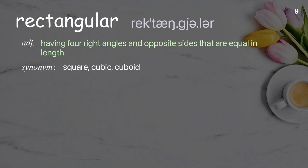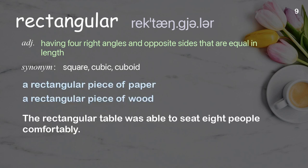Rectangular: having four right angles and opposite sides that are equal in length. Examples: a rectangular piece of paper, a rectangular piece of wood. The rectangular table was able to seat eight people comfortably.